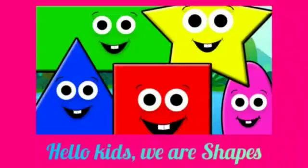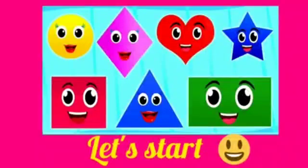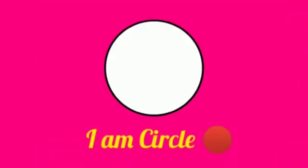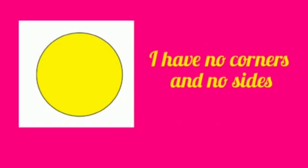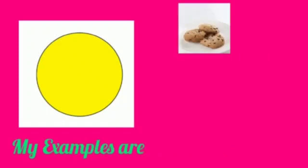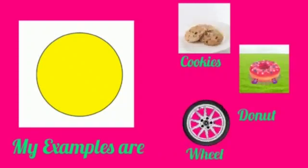Hello kids, we are shapes. Let's start. I am a circle. I have no corners and no sides. My examples are cookies, donuts, and wheel.